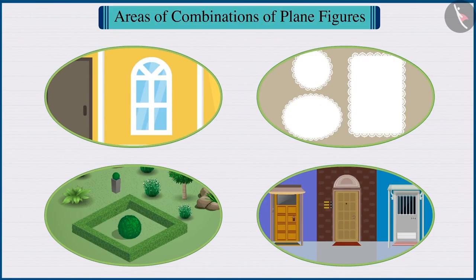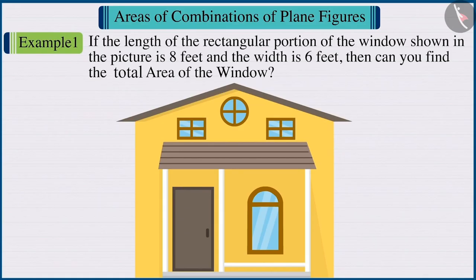Let's see some similar examples of plane figures. If the length of the rectangular portion of the window shown in the picture is 8 feet and the width is 6 feet, then can you find the total area of the window? Come on, let's discuss on this.